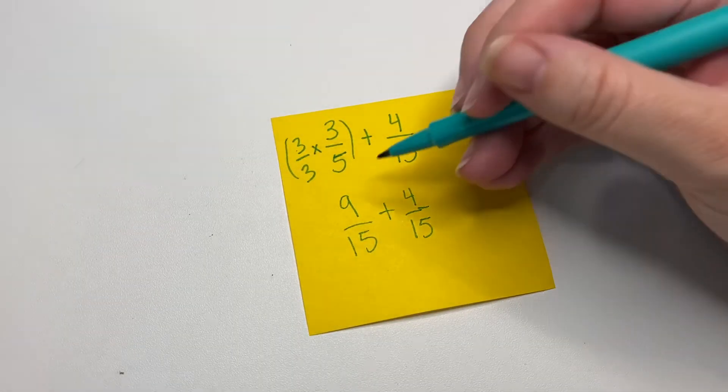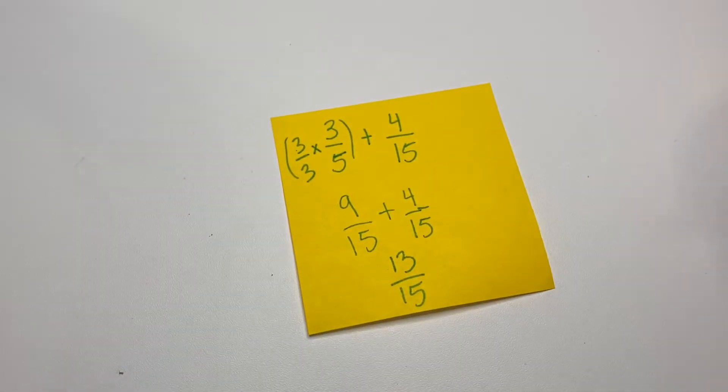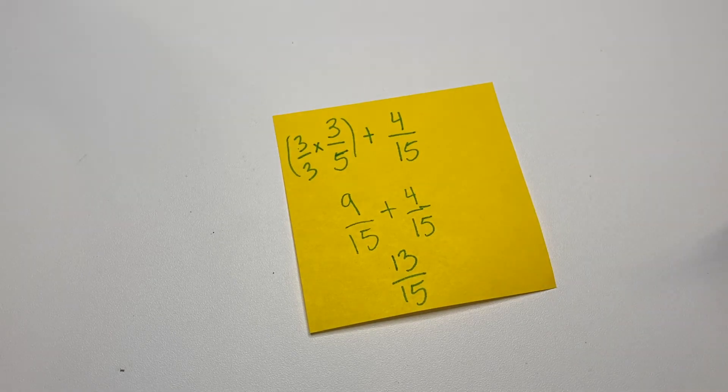And then we're going to bring down our 4 fifteenths. And then 9 plus 4 is 13. Keep the denominator. So we add the numerators and we keep the denominator.